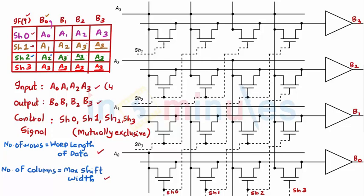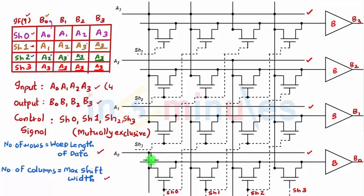Now let's see how the diagram looks after all the internal shorting. These are just buffers producing the same output. You can see A0 line, A1 line, A2 line, and A3 line. When shift 0 is 1, the signal goes to the first transistor input, then the second, then the third, then the fourth — these are the B0, B1, B2, and B3 output lines.